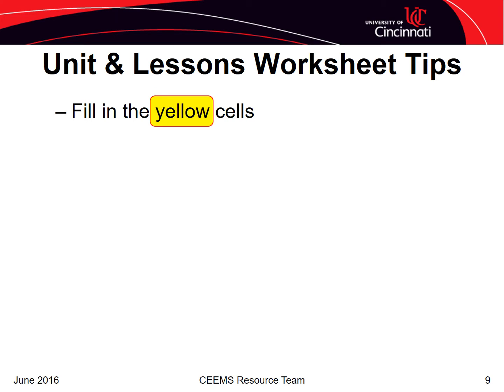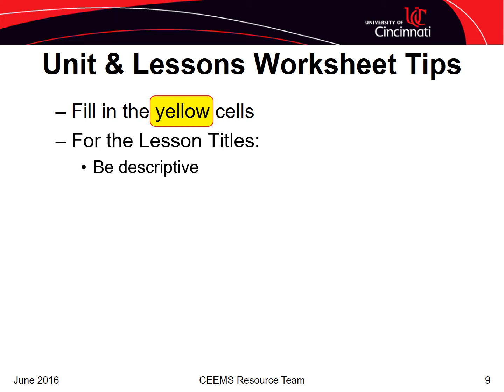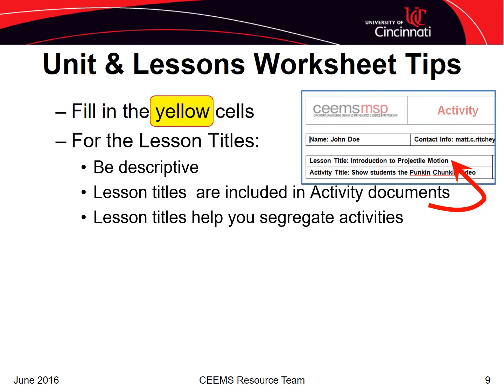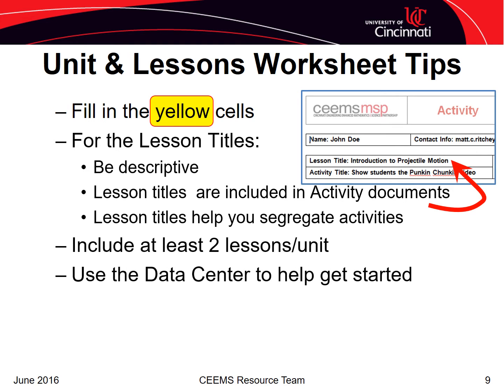Before we move on to the second tab, here are some tips for filling out the first tab. Focus on filling in the yellow cells. If you're not sure what goes in a cell, place your cursor over it and a help box will appear. Most cells have help, or there is help in the column header. When you create your lesson titles, be descriptive, as these titles help segregate your activities and will be included in your activity documents. There are no lesson documents created by the unit file generator as a means of reducing documentation. Remember that you will develop at least two lessons per unit, and if you want to see examples, explore the data center.